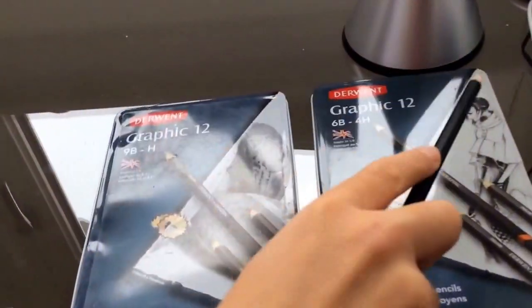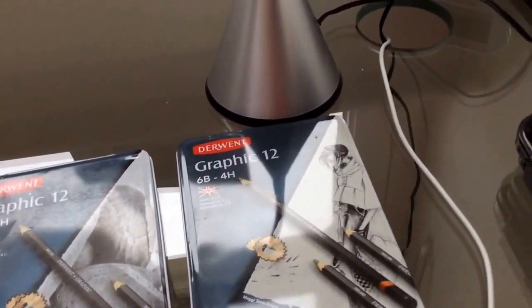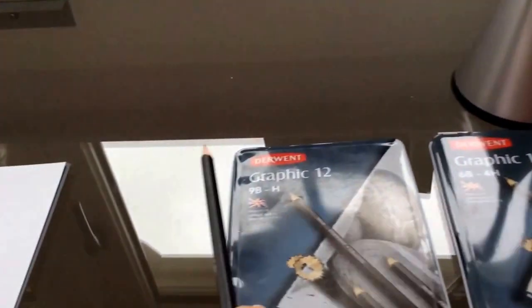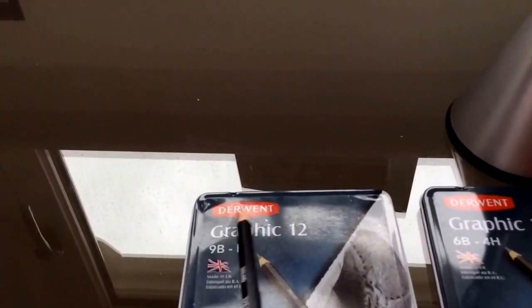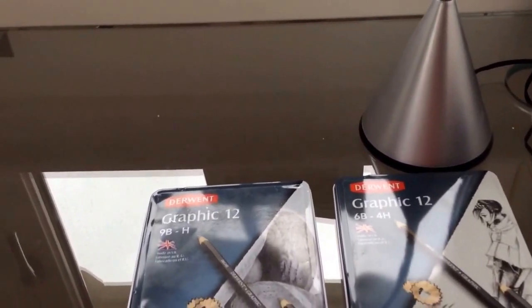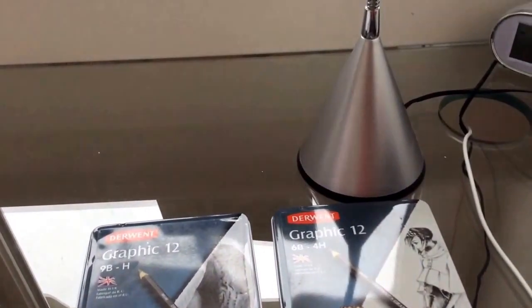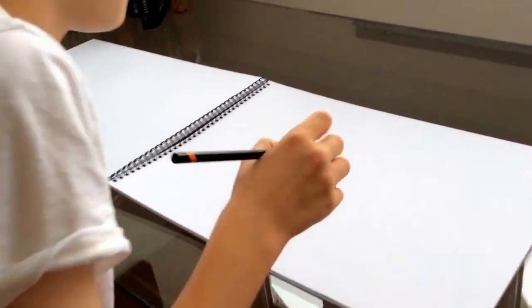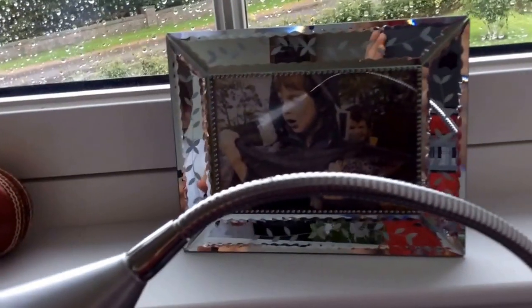We're going to be using Graphite 12 and some more Graphite 12s, but the difference is a 9B/H and 6B/4H. We're going to be starting off with the 4H, and as I said, we're drawing a brown trout.